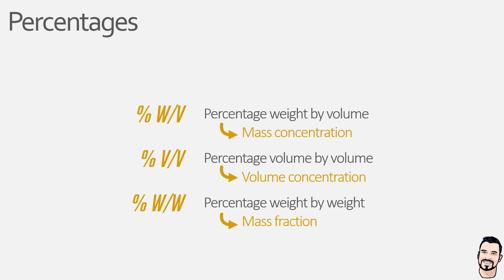Now just to re-emphasize, they are all very different. A one percent weight per volume solution, a one percent volume per volume solution, and a one percent weight per weight solution may be very different, and that is because the density of a solute may have a different mass per unit volume — with a key exception being water.